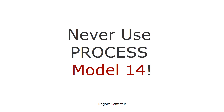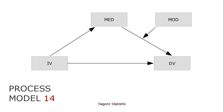That's especially process model number 14. Process model number 14 is a moderated mediation where the B path of the model is moderated, but where there is no moderation for the direct effect C prime. This model can lead to seriously biased results and completely false conclusions. I will show you why that is the case with some examples, what to do instead, and which other process model templates have the same problem.